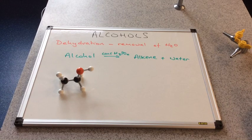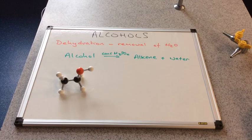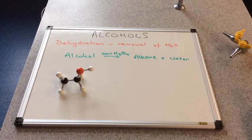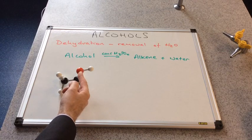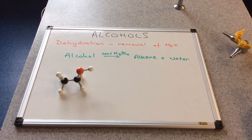This short video is about one of the reactions we need to study about alcohols: the dehydration reaction. That's obviously the removal of water. Basically, if you react an alcohol with concentrated H3PO4 — concentrated phosphoric acid — that will remove the water from the alcohol, so you create an alkene and water.